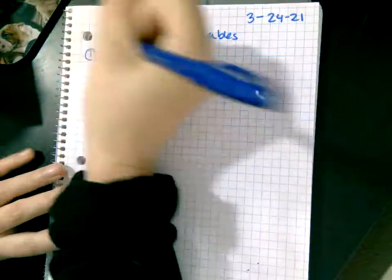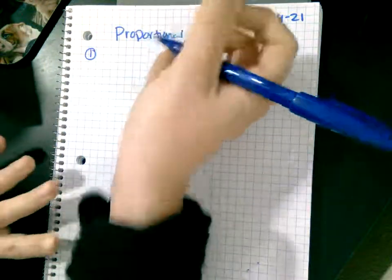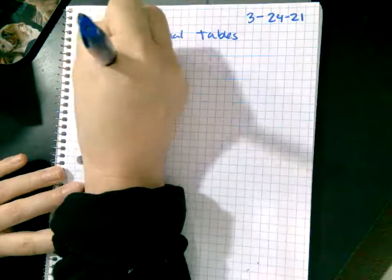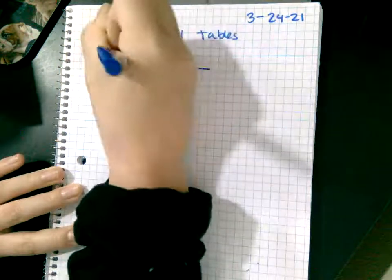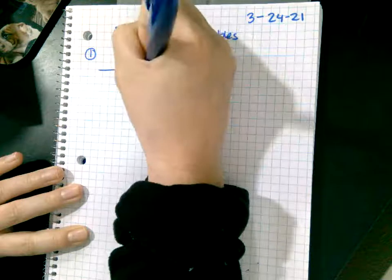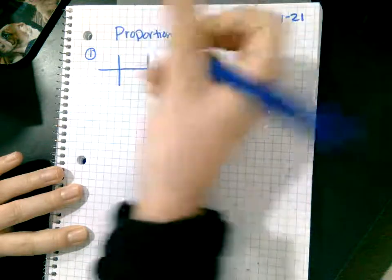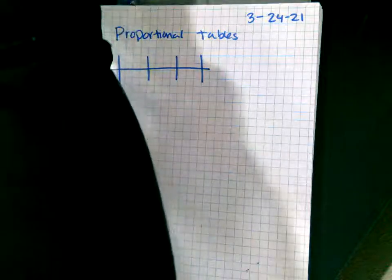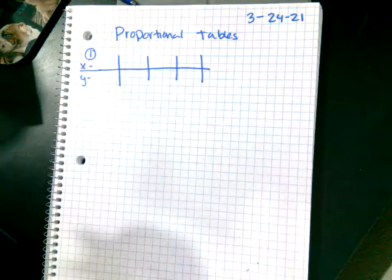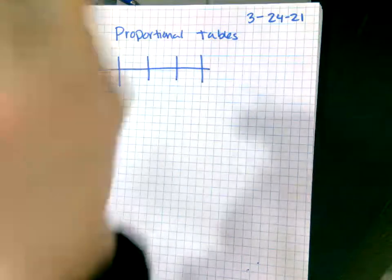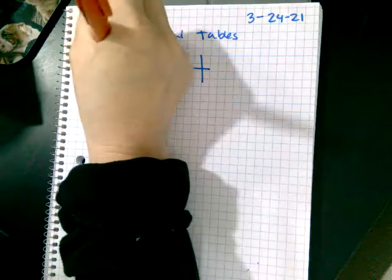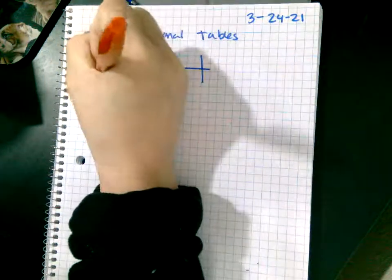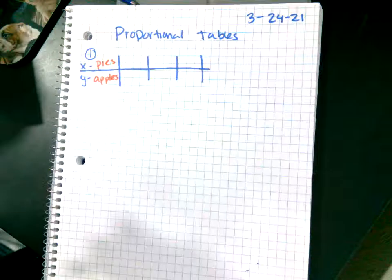Here's my table. I'll start off with the same table then I'll change it so I don't confuse you that much, at least not right away. Your x is going to be pies and your y is going to be apples. You're given the table.